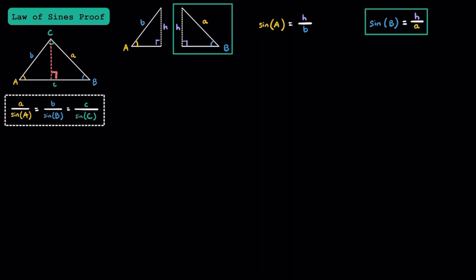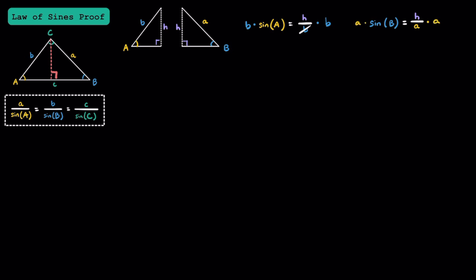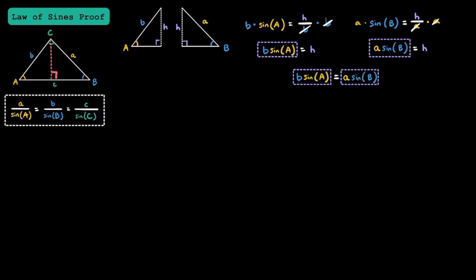And for the triangle on the right, we can use the same trig function and say that sine of angle B is equal to h over a. For the equation on the left, we can multiply both sides by b, and for the equation on the right, we can multiply both sides by a. These will cancel out, giving us b times sine of A is equal to the height, and a times sine of B is equal to the height. Since the height equals both expressions, we can set them equal to each other. Now let's rearrange it — let's divide both sides by AB.